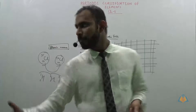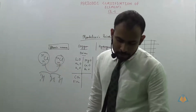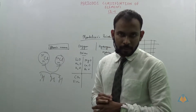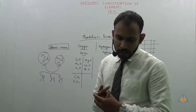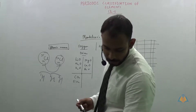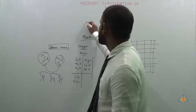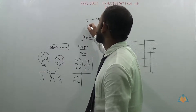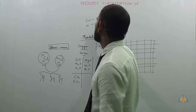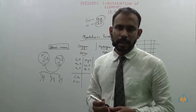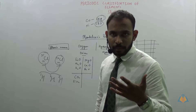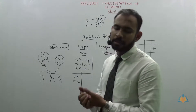The second limitation is that the wrong order of atomic masses of some elements could not be explained. For example, cobalt has an atomic mass of 58.9 whereas nickel has an atomic mass of 58.7, yet cobalt was placed before nickel. No one — not even Mendeleev — could explain why, and this was one of the major reasons why Mendeleev's classification was not fully accepted.